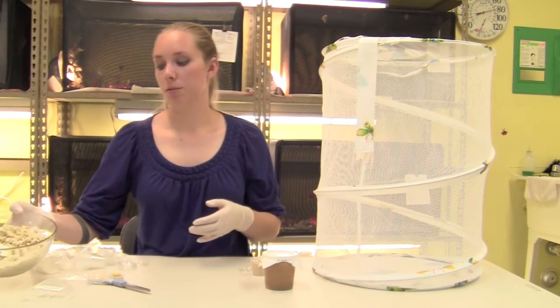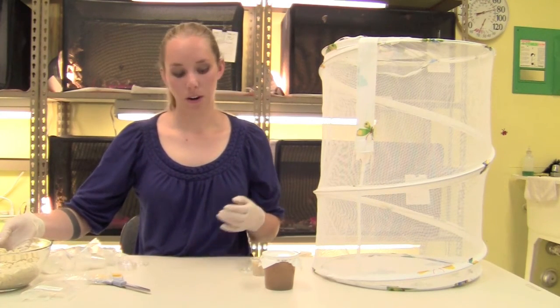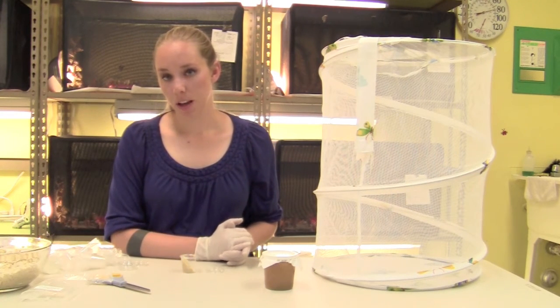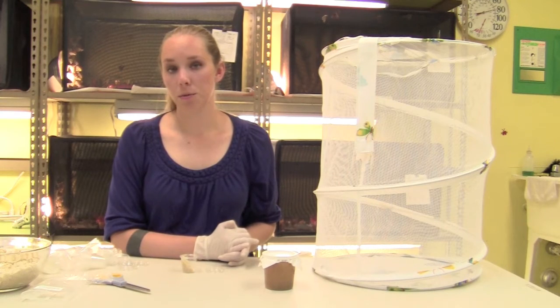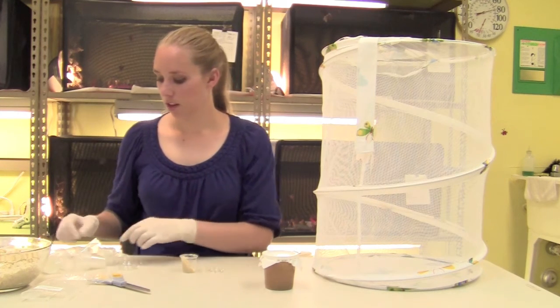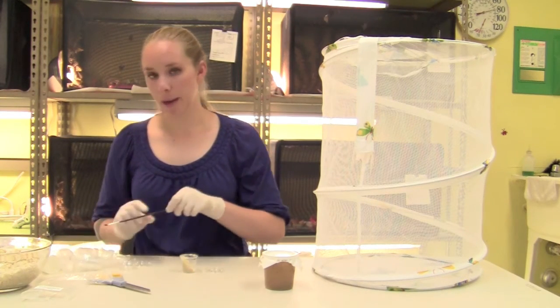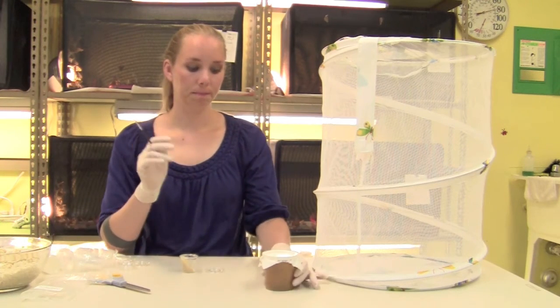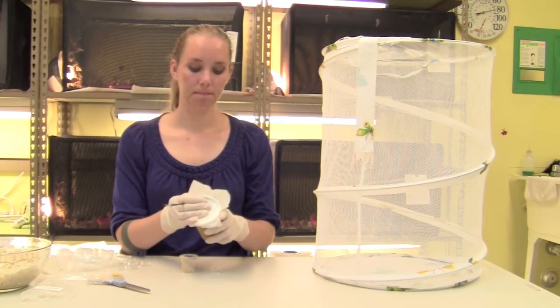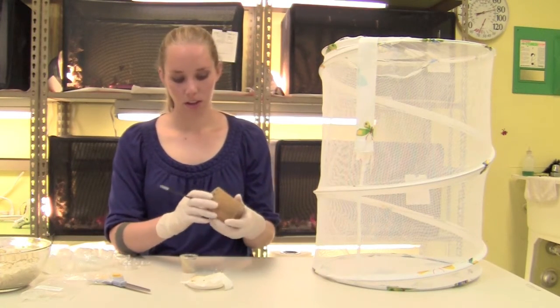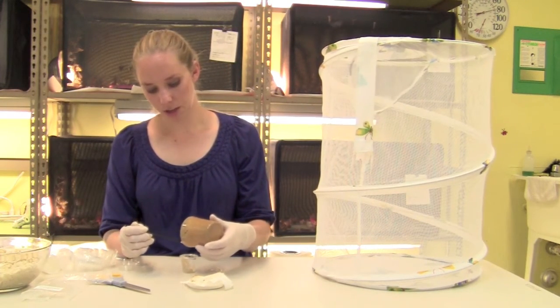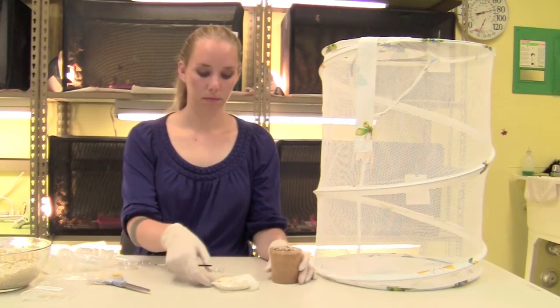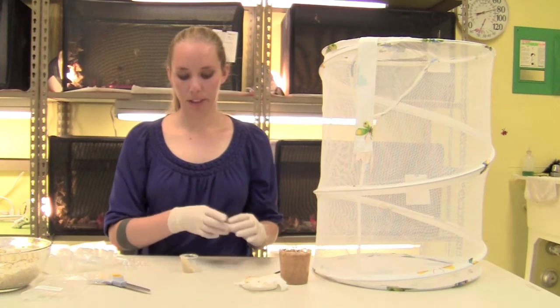Once you put food in each of the cups, you're ready to transfer the larvae. The larvae should be at least one centimeter in length before you transfer them. If they're smaller than one centimeter, you run the risk of injuring them. You should only transfer them with the paintbrush provided. Your fingers can damage them as well. Transfer one larvae into each of the cups, and then place the lid on.